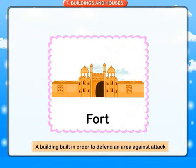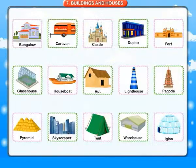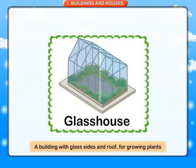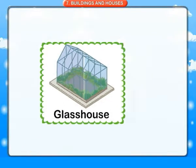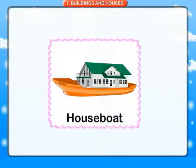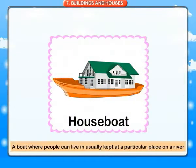Castle: a large strong building with thick high walls and towers, built in the past by kings or queens to defend themselves against attack. Duplex: a flat apartment with rooms on two floors. Fort: a building built in order to defend an area against attack. Glass house: a building with glass sides and roof for growing plants.